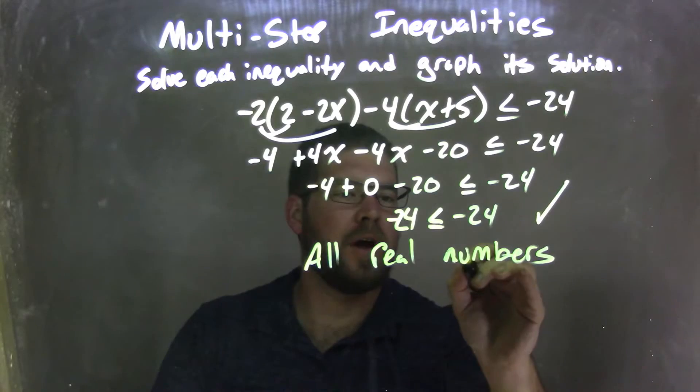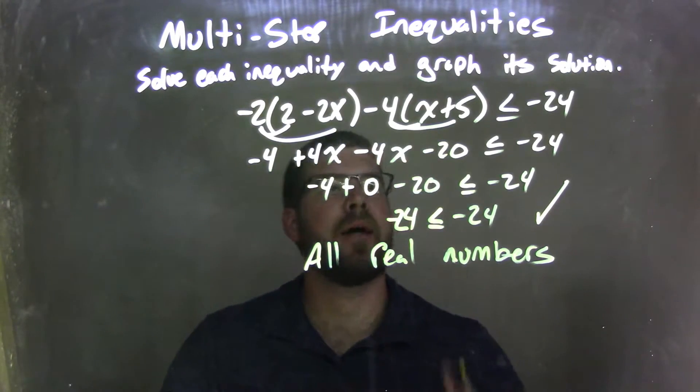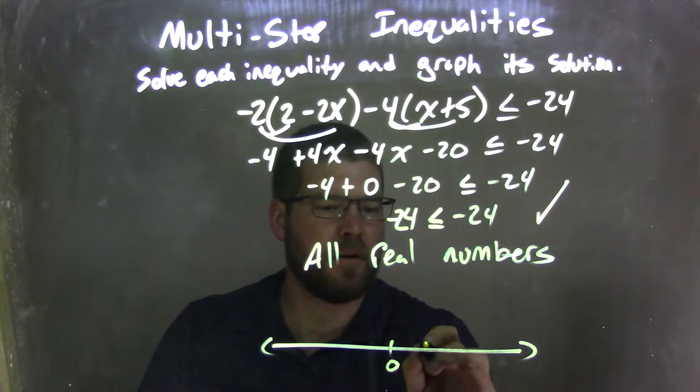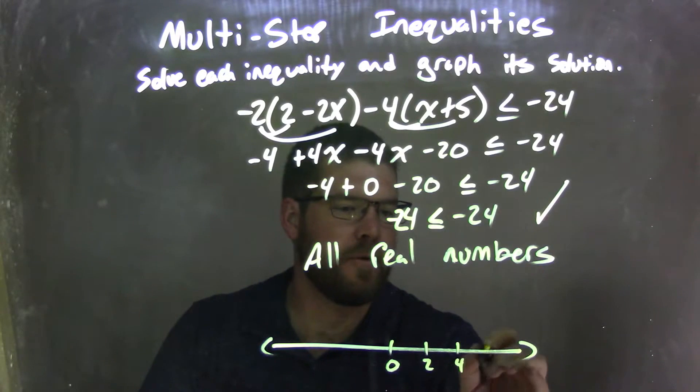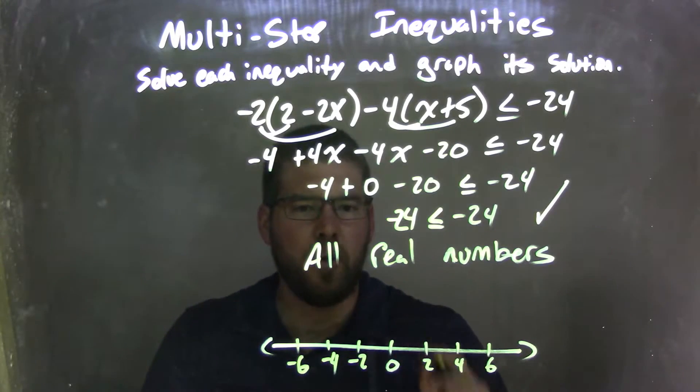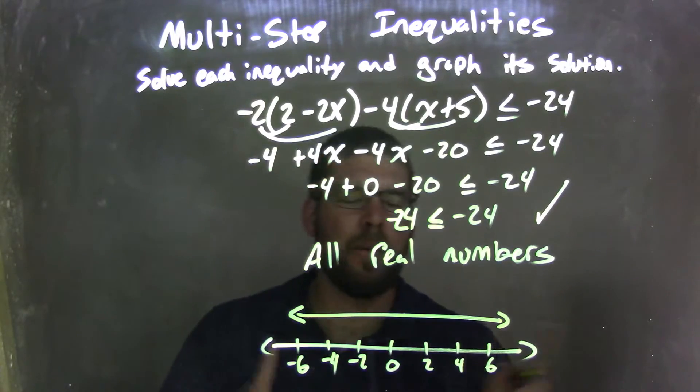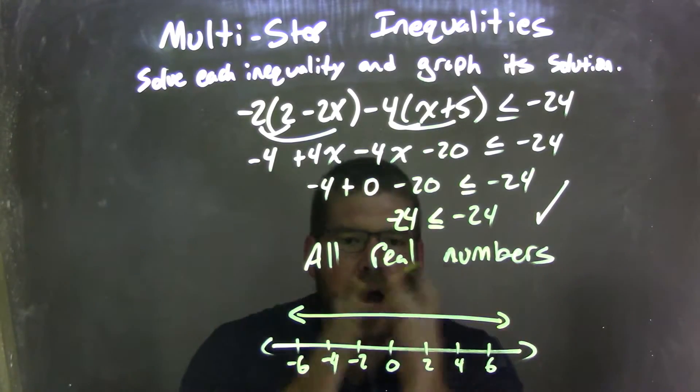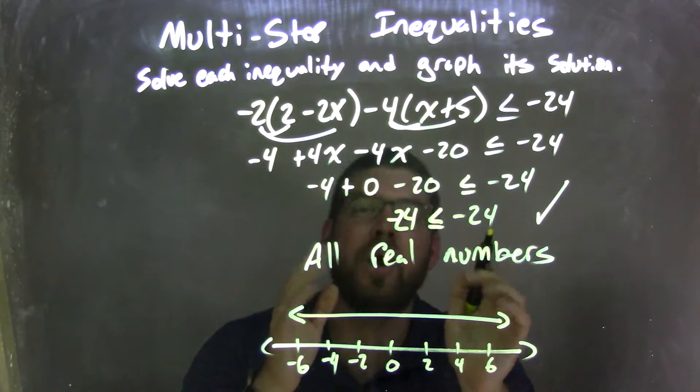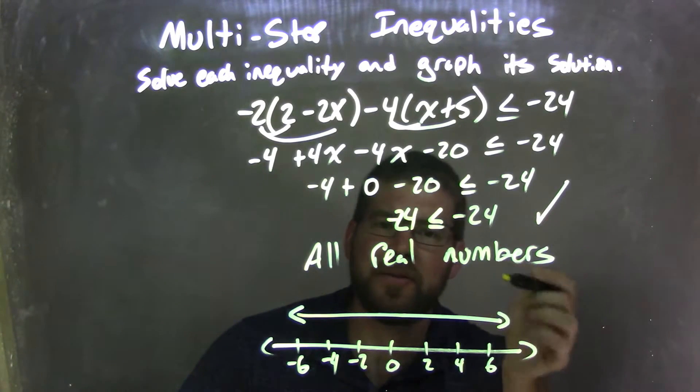Meaning that any number that we plug in for x here, any real number, that will make this a true statement. So all real numbers work. So how do we graph that? So I have my number line here: 0, 1, 2, 4, 6, negative 2, negative 4, negative 6. Well, how I graph this is actually, I just draw a line and an arrow on both sides showing that all real numbers, every number, any real number that could possibly exist, would work for this equation or this inequality, making it true. So our graph matches our final answer of all real numbers.